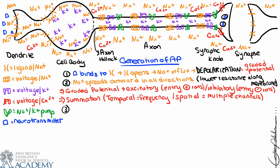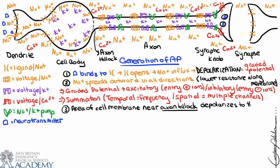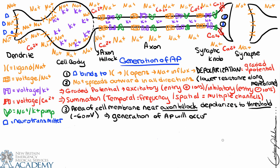If those sodium ions are able to make it all the way around the cell body towards the axon hillock, and they're able to depolarize the areas of the membrane near the axon hillock to what's called threshold potential, then we can generate an action potential. Threshold is the absolute minimum requirement in order to generate an action potential. In a neuron it's about minus 60 millivolts — this value varies depending on the source, but we'll use minus 60 as our cutoff. If membrane depolarization occurs near the axon hillock to minus 60 millivolts, we will generate an action potential, absolutely for sure.